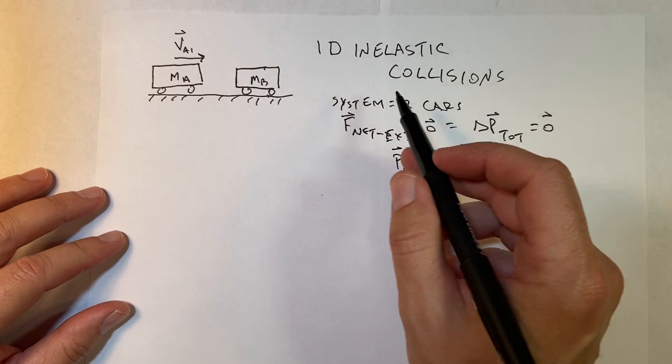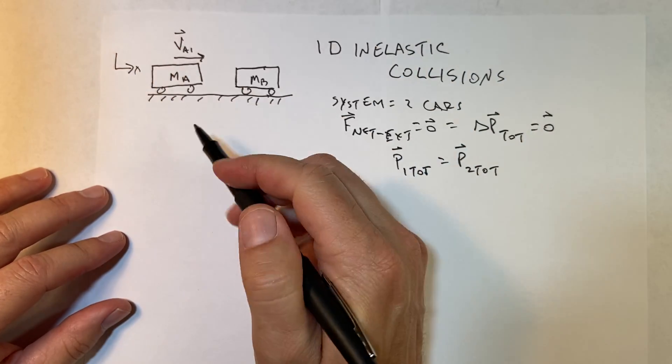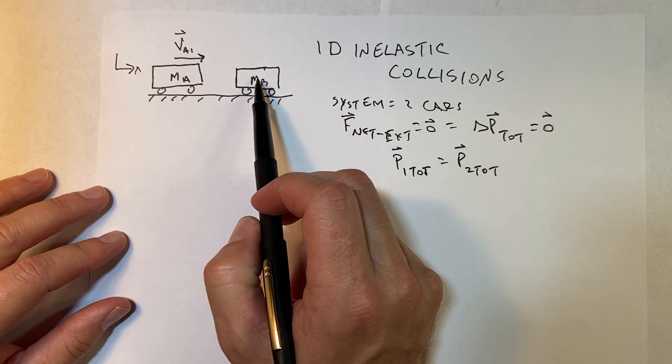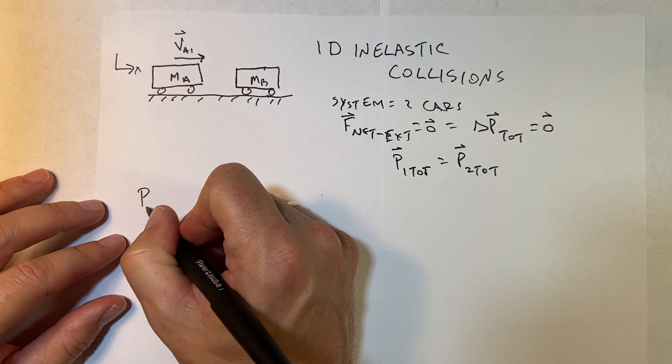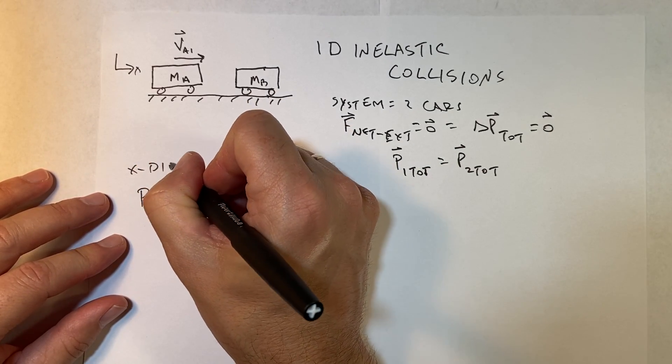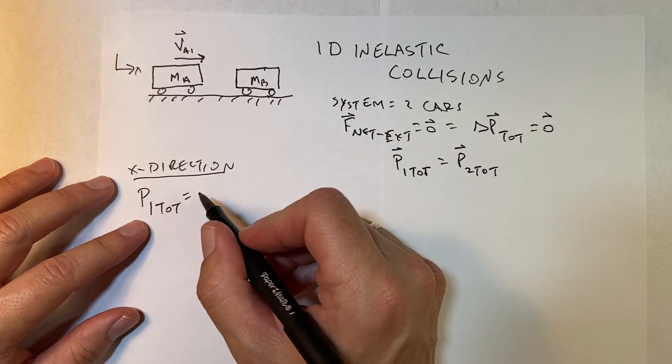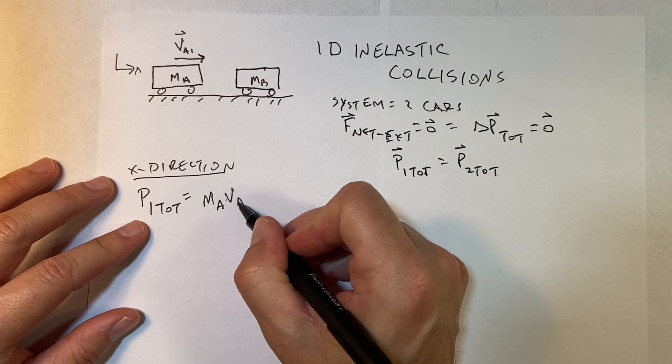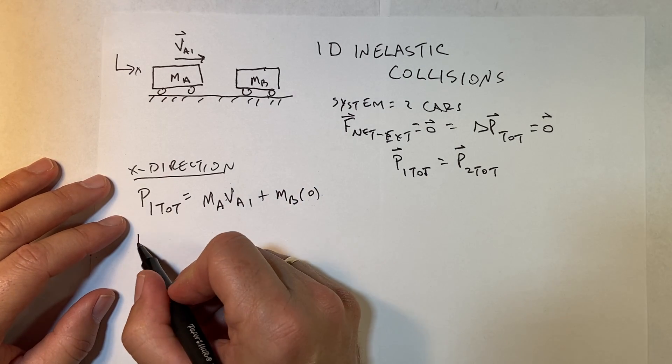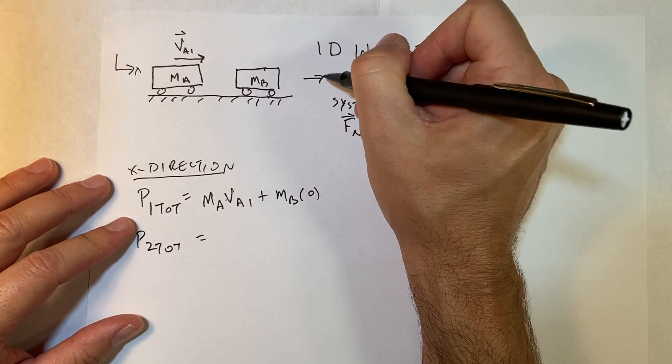I know the momentum before. Let's use this case in the x direction. The initial velocity of car A is some value v_A1 in the x direction and that one's zero. So I can say P initial total, this is in the x direction, that's why it's one-dimensional. P initial total is going to be the mass of A times v_A1 plus the mass B times its velocity of zero, it's not moving.